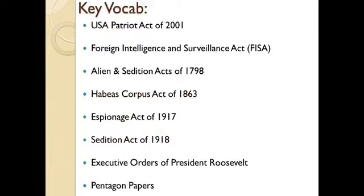Let's go over a couple of key ideas and some key vocab that we're going to discuss in this lesson. We're going to talk about the USA Patriot Act of 2001, the FISA courts and the Foreign Intelligence and Surveillance Act, the Alien and Sedition Acts of 1798, the Habeas Corpus Act of 1863, the Espionage Act of 1917, the Sedition Act of 1918, Executive Orders of President Roosevelt during World War II, and the Pentagon Papers. This lesson will focus on national security versus privacy rights.